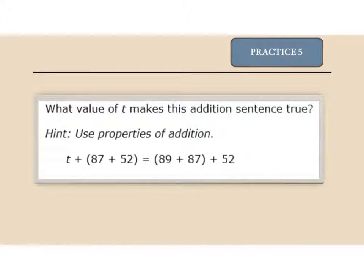Practice 5 asks which value of T makes this addition sentence true. This is associative. I'm using grouping. I have three numbers, 89, 87, 52. And on this side I have 87 and 52. So T must be the number that is missing. And if that's the case, the number that is missing is 89. So T has to equal 89.